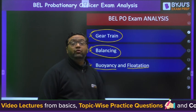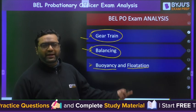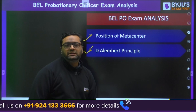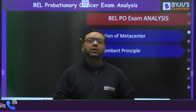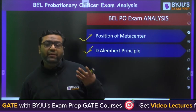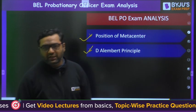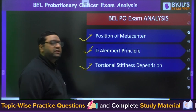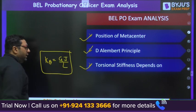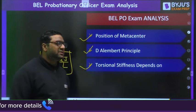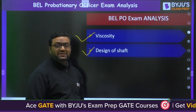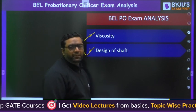From fluid mechanics, a question on buoyancy and flotation was there — also an important topic for GATE. Then one question on position of metacenter. From engineering mechanics, a question on D'Alembert's principle was there. One question on torsional stiffness — torsional stiffness is expressed as GJ/L. One question from fluid mechanics on viscosity, and next was from design of shaft, once again from machine design. These were the complete topics received from the students.